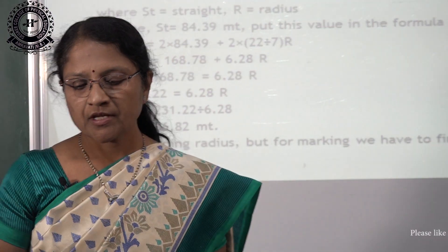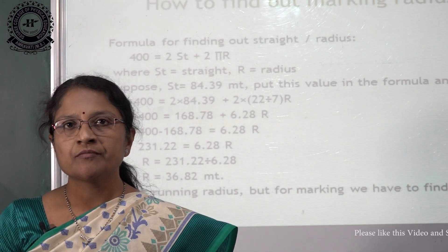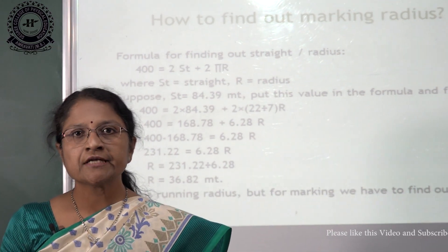Now we see about marking of 400 meter track. You know the shape of a track is oval shape. It contains 2 straights and 2 courts.